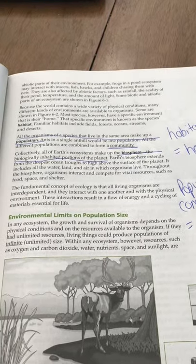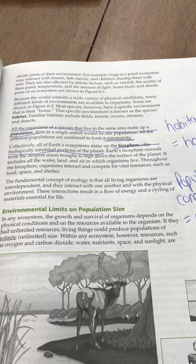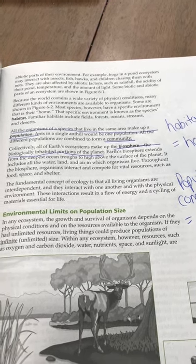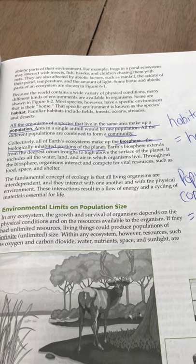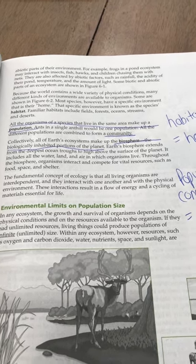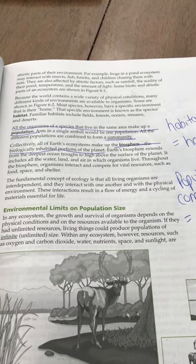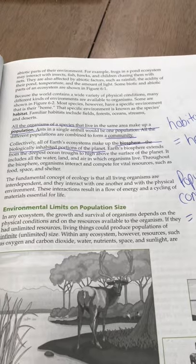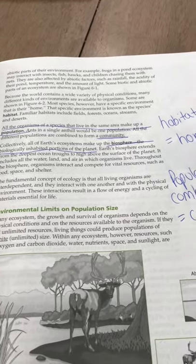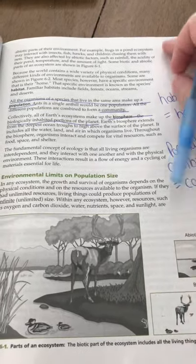Earth's biosphere extends from the deepest ocean troughs to high above the surface of the planet. It includes all the water, land, and air in which organisms live. Throughout the biosphere, organisms interact and compete for vital resources, such as food, space, and shelter. The fundamental concept of ecology is that all living organisms are interdependent, and they interact with one another and with the physical environment. These interactions result in a flow of energy and cycling of materials essentials for life.